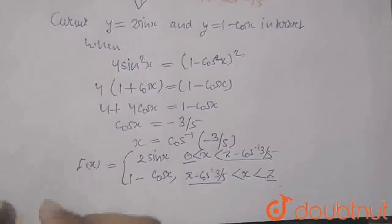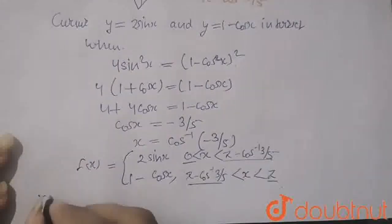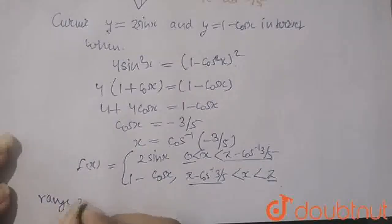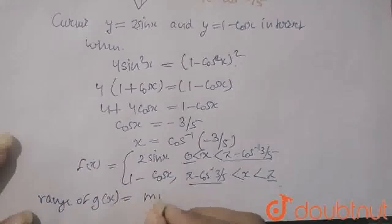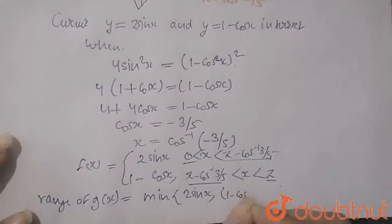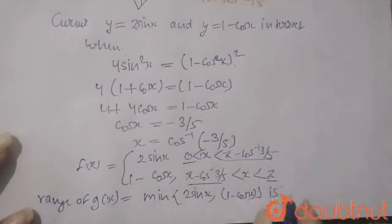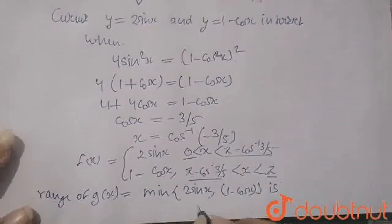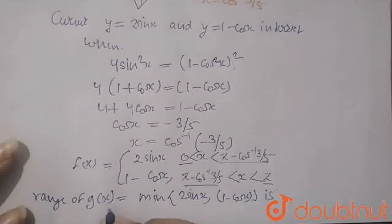Also we have to find the range. So the range of gx, which is given in the question, is minimum of 2sinx comma 1 minus cosx. This is given in the question.